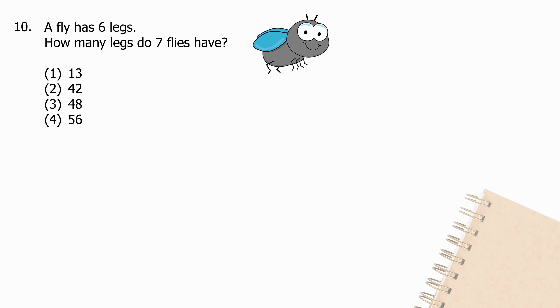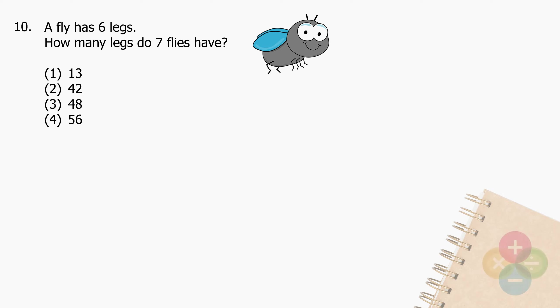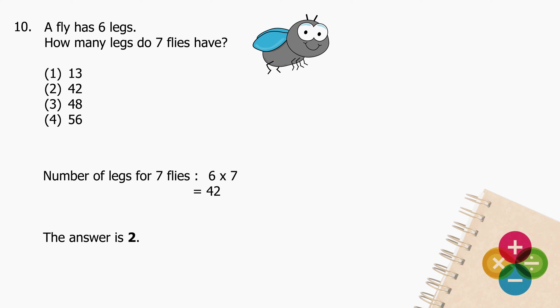Question 10: A fly has 6 legs. How many legs do 7 flies have? Multiply 6 by 7 and the product is 42. The answer is 2.